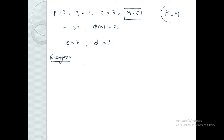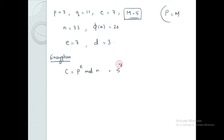Now we perform encryption. The encryption equation gives the ciphertext C equals P raised to e mod n. The receiver uses the public key, where e equals 7 and n equals 33. Substituting M equals 5: C equals 5 raised to 7 mod 33. 5 raised to 7 equals 78125.